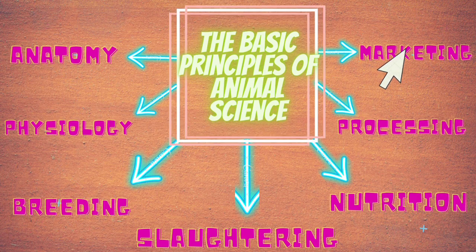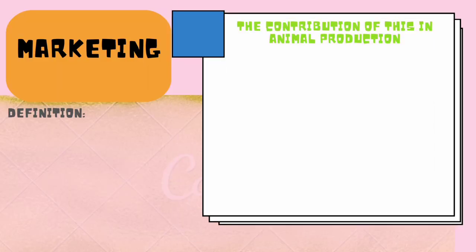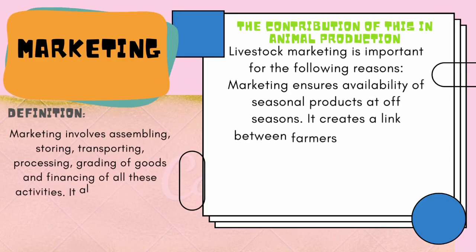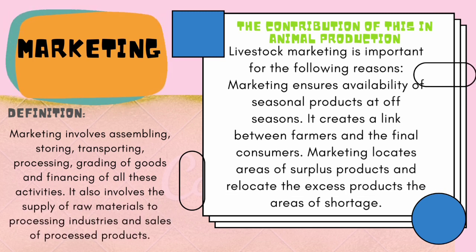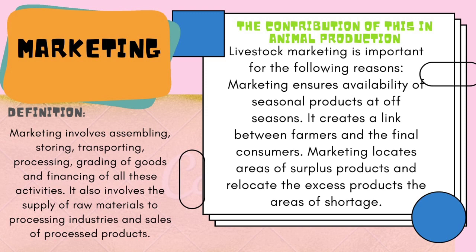The last principle is marketing. Marketing involves assembling, storing, transporting, processing, trading of goods, and financing of all these activities. It also involves the supply of raw materials to processing industries and sales of processed products. Livestock marketing is important because it ensures availability of seasonal products off-season, creates a link between farmers and final consumers, and locates areas of surplus products and relocates the excess products to areas of shortage.